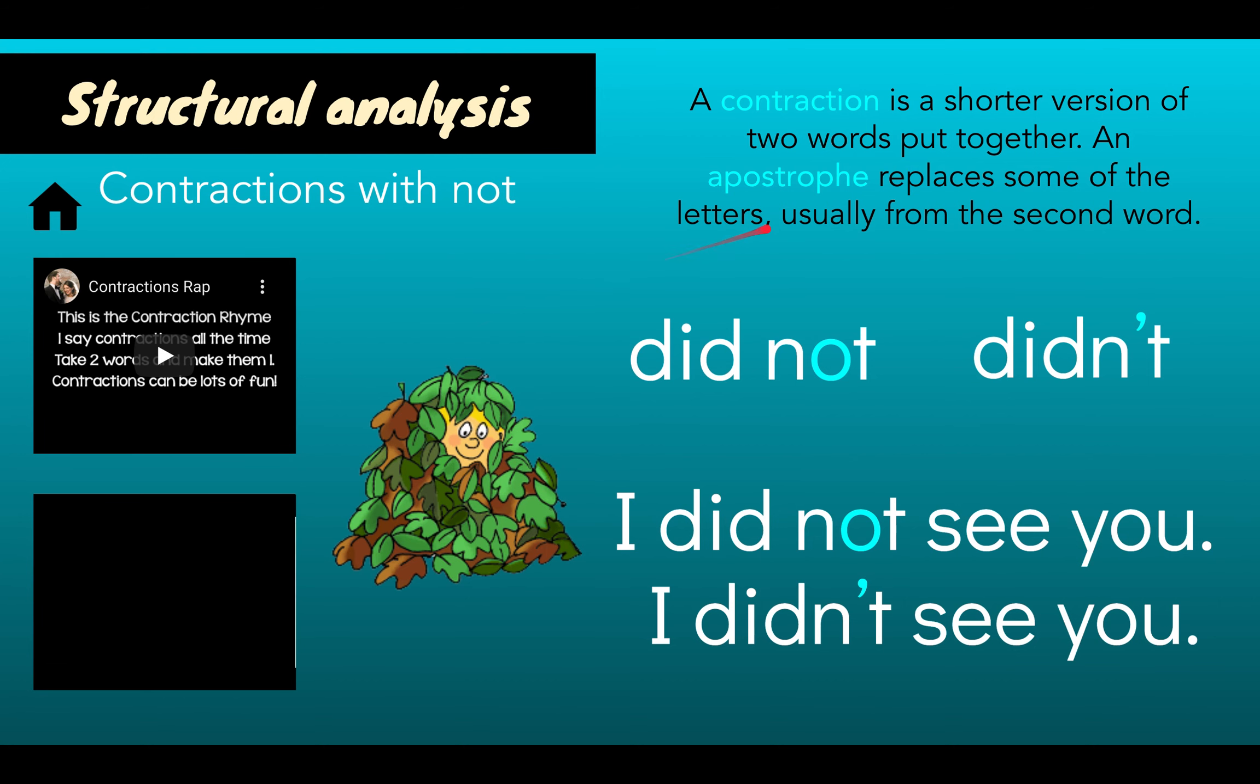Remember, a contraction is when you put two words like did and not together. But just like in our other video, you squash it. You're going to squash the O in not. Combine the words and replace it with the apostrophe. I did not see you. I didn't see you. We're going to be practicing this skill all week long.